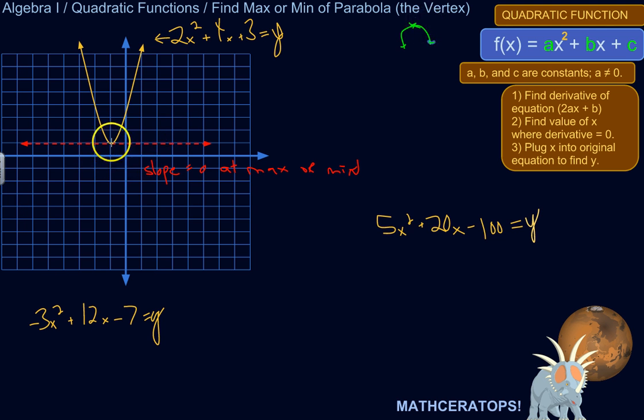So how do you actually find the max or min? How do you find the vertex? Besides, I mean, you could pop it into a graphing calculator or a graphing program online or something, and just look at it and there's the vertex. But you can also calculate the coordinates of the vertex.